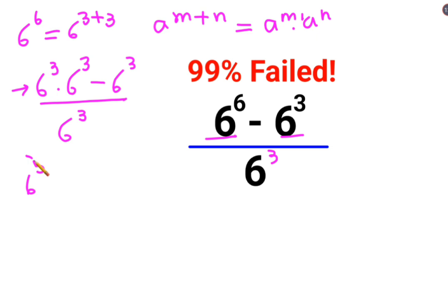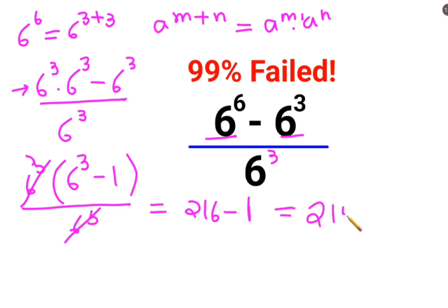When 6 raised to 3 is taken common, you are left with 6 cube minus 1 upon 6 cube. This and this gets cancelled. So here we get 6 cube which is 216 minus 1. The answer for this question is 215.